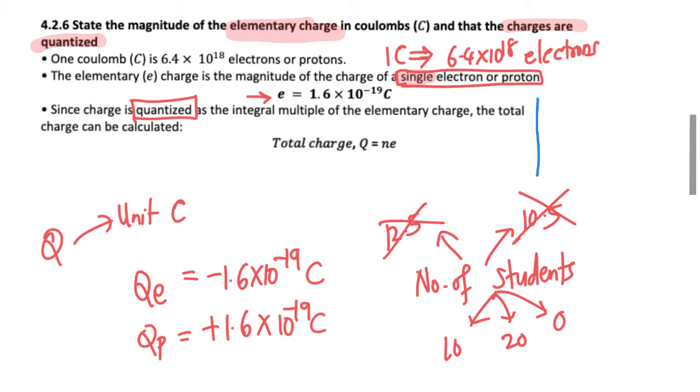It can lose or gain an integral number of electrons. For example, an object can lose three or four electrons, or gain three or four electrons, but it cannot gain or lose three and a half electrons. There's no place for a decimal—we can't split the electron.